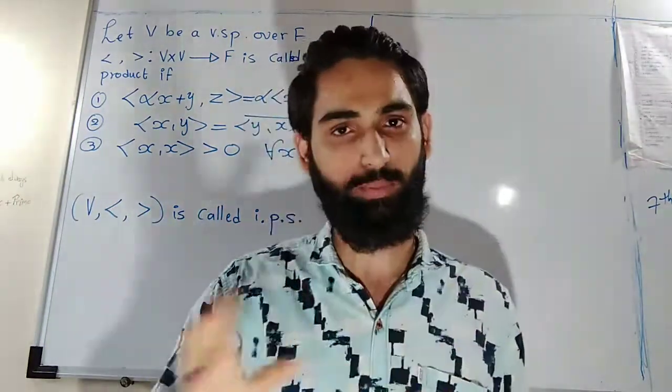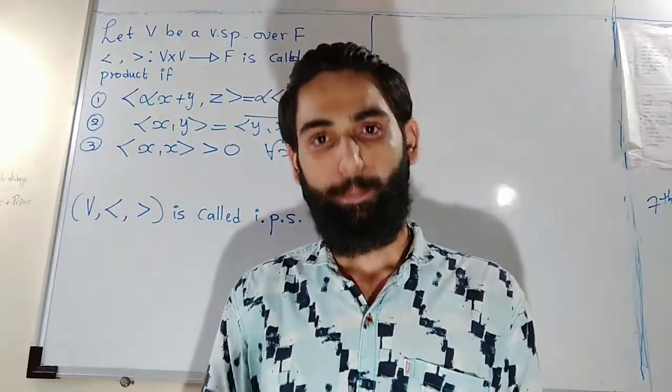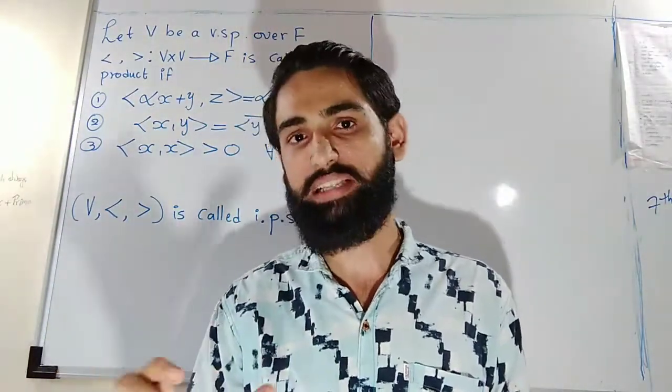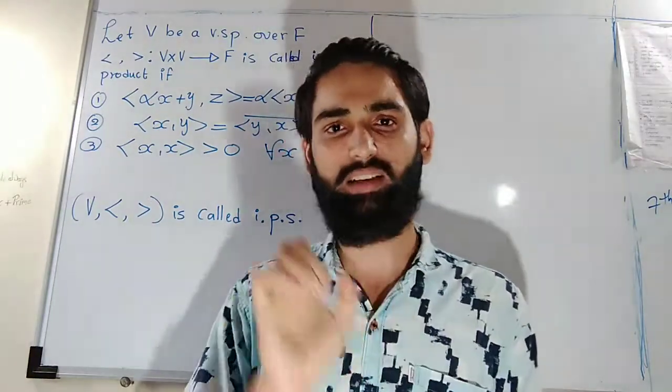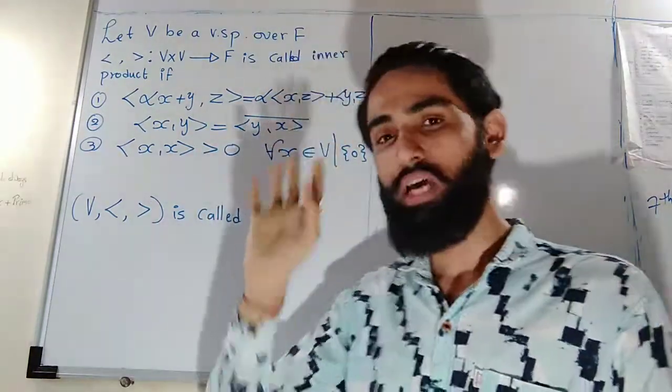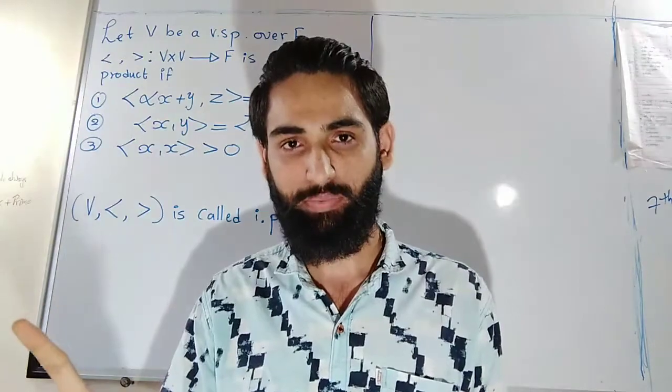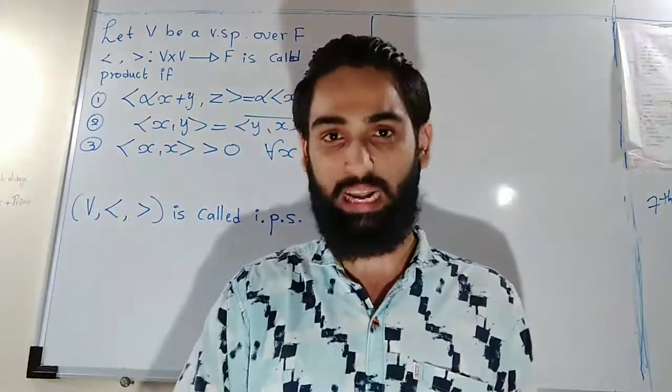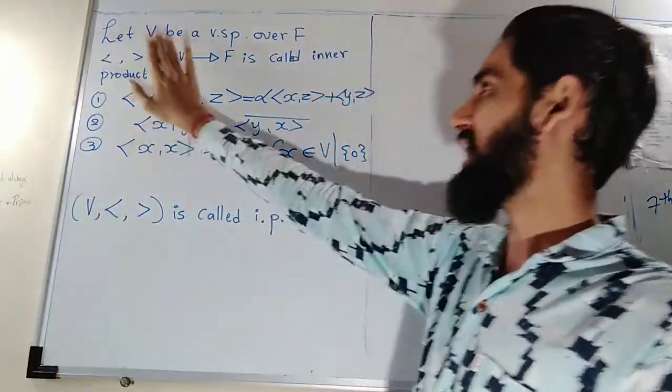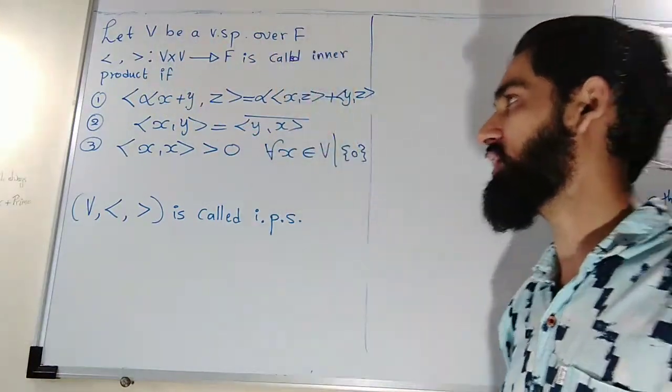That means you learn vector space over R only. But in semester 6, you will understand the idea of what is a field. Hence, from now I will use the word vector space over the field F. But you can assume F is nothing but your real numbers R. So for you, let V be a vector space over real numbers.